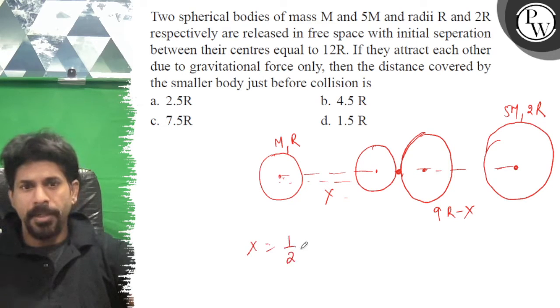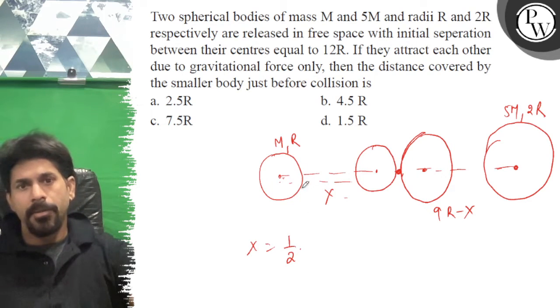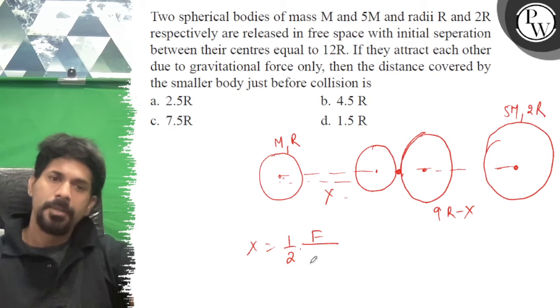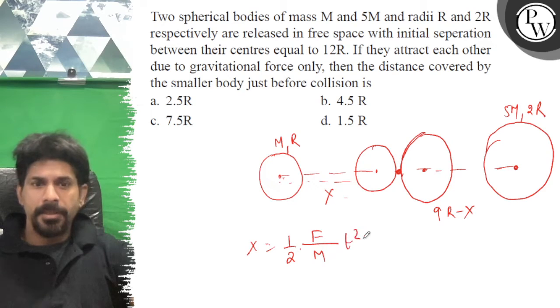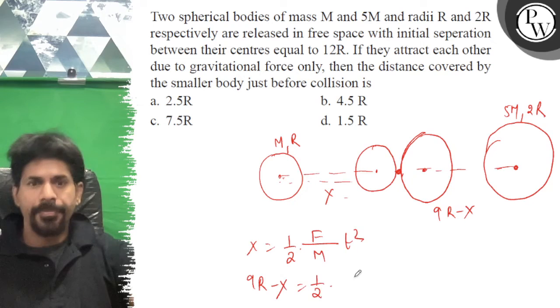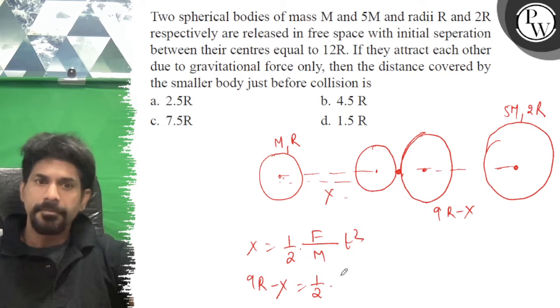x equals half at squared. Force of attraction, same mass m into t squared. 9R minus x equals 1/2 times m over 5m times t squared.